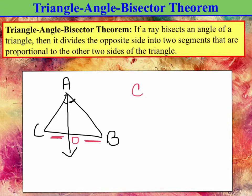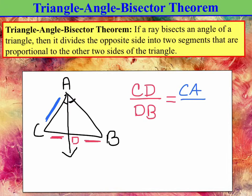We're talking that CD over DB, so CD over DB is the same exact thing as CA. It's the same thing as CA over BA. So those sides are now proportional to each other just because this ray right here bisected the angle A.